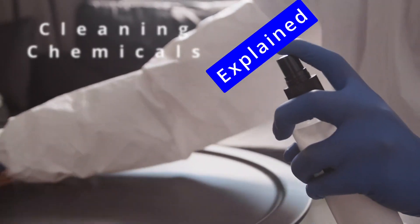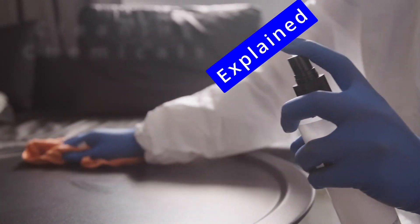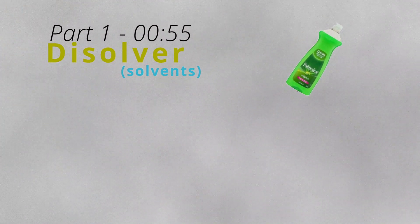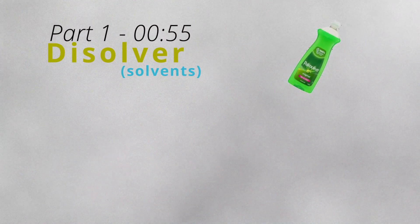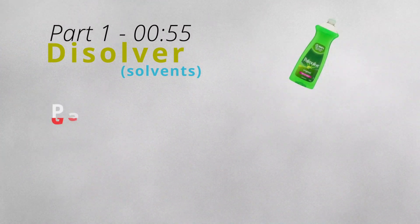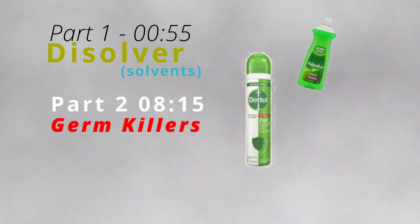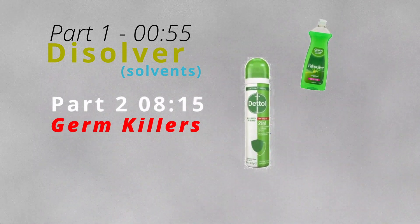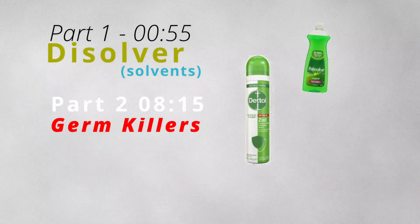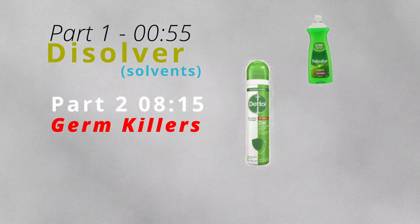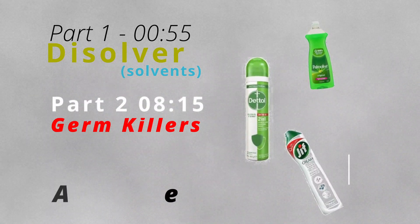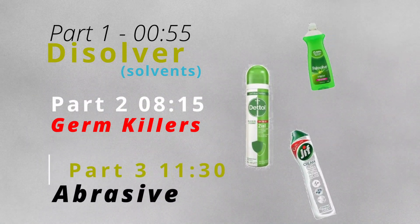To make understanding all of this much easier, I've grouped all these cleaning chemicals into three main categories. Number one is cleaning chemicals that dissolve your mess. Number two, I'll be talking about chemicals that don't actually do any cleaning at all but they kill germs and viruses. And finally, chemicals and products that kind of scratch away your mess, otherwise known as abrasives.